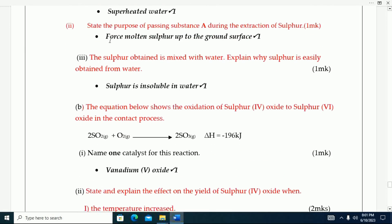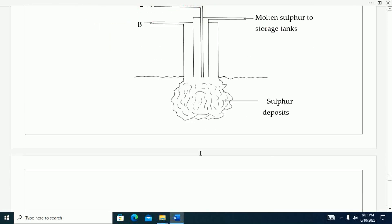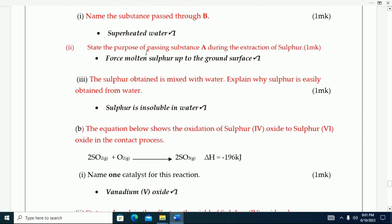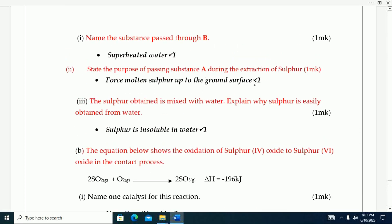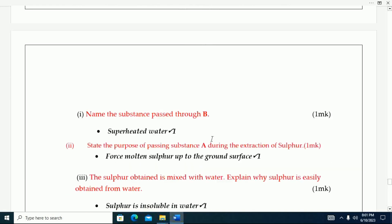State the purpose of passing substance A during the extraction of sulfur. Force molten sulfur up to ground surface. This one is to force molten sulfur up to the ground surface. This water will come and then it will force the molten sulfur out.